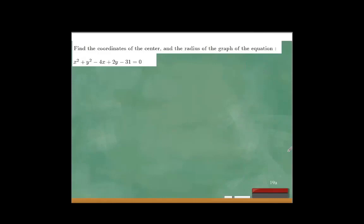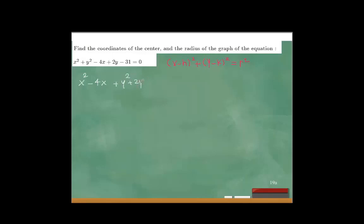Find the coordinates of the center and radius of the circle given by the equation. To get this into the general form (x − h)² + (y − k)² = r², I need to complete the square twice. I'll gather all the x terms: x² − 4x, and all the y terms: y² + 2y, moving the constant 31 to the other side.